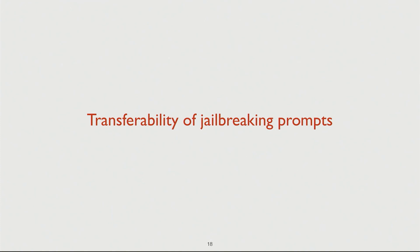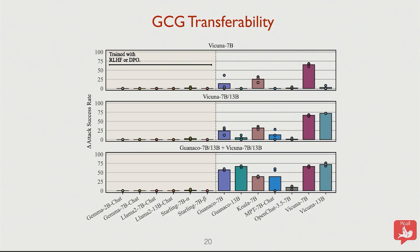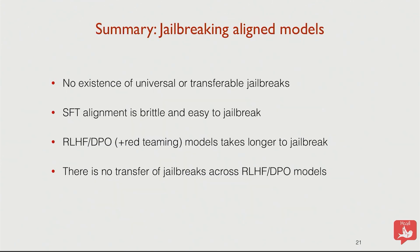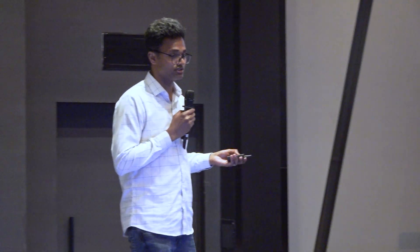Let's look at the transferability of jailbreaking prompts: if you find a prompt for one model, does it transfer to other models? We see the same pattern. You might find a single prompt that works across different SFT models — supervised fine-tuned models that don't go through additional RLHF or DPO — but when it comes to RLHF models, we did not see much trigger transfer at all. Universal triggers may still exist with newer models, but they are very hard to find and require a lot of compute.